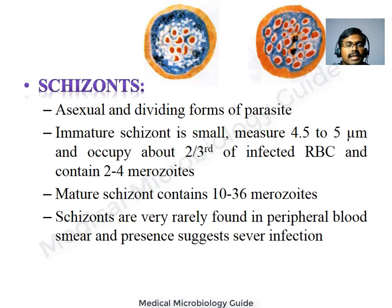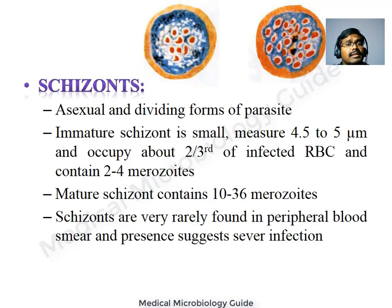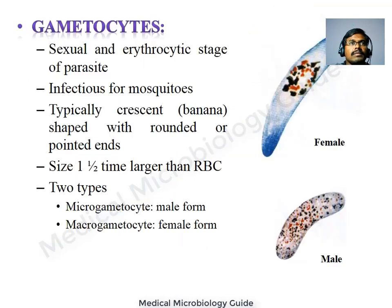Schizonts are generally not seen in the peripheral blood — they are sequestered in the microvasculature. If schizonts are seen in the peripheral blood, you must suspect the person is suffering from a severe infection. Gametocytes are the sexual intraerythrocytic stage of the parasite and are infectious for the mosquito.